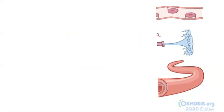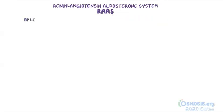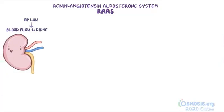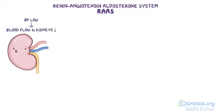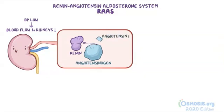One important mechanism that regulates blood pressure is the renin-angiotensin-aldosterone system, or RAS for short, which is a cascade of events that ends up increasing blood pressure. When blood pressure is low, blood flow to the kidneys decreases. The kidneys respond by secreting renin into the bloodstream. Renin is a proteolytic enzyme that breaks down a protein made in the liver called angiotensinogen, and this gives rise to angiotensin 1.